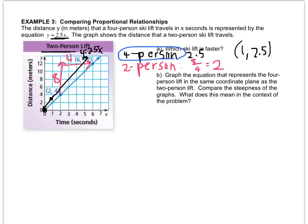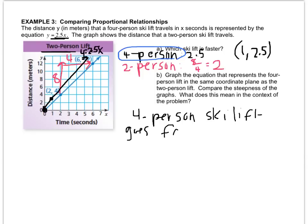So if the four person is steeper or it goes faster, what does that mean in terms of the ski lifts? Come up with an answer. My answer is going to say that the four person ski lift goes faster because the line is steeper.